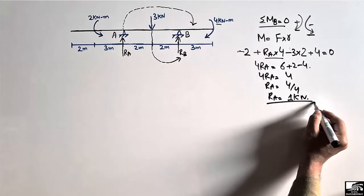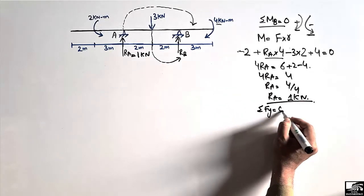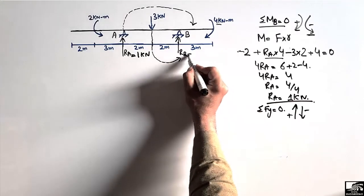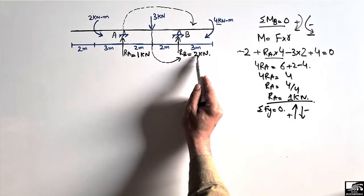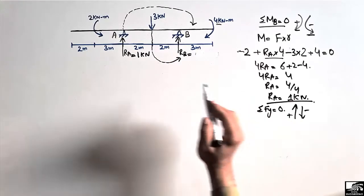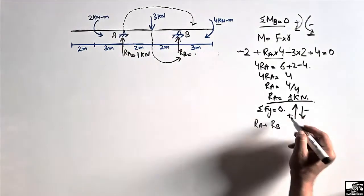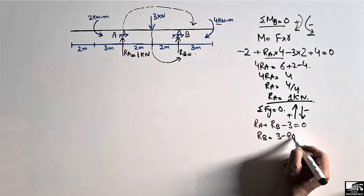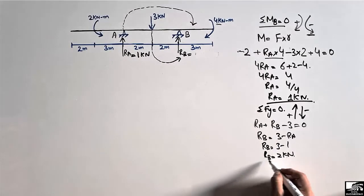Now we find RB using the equation summation of vertical forces equal to zero. Upward forces RA and RB are taken as positive, and the downward load of 3 kN is taken as negative. So RA plus RB minus 3 equals zero. Since RA is 1 kN, RB equals 3 minus 1, which gives RB equal to 2 kN.